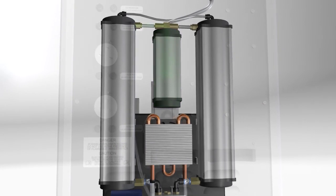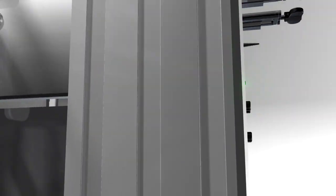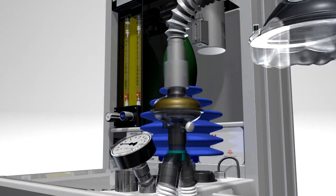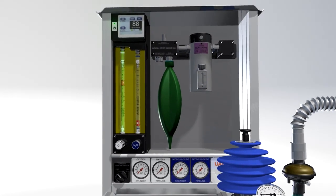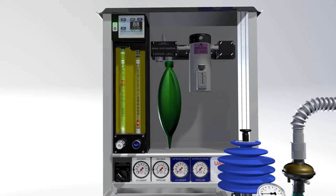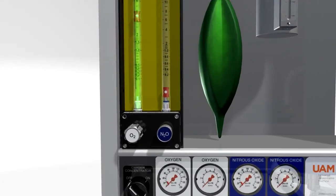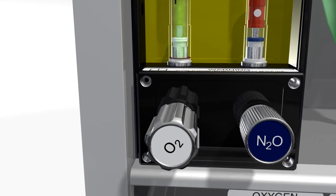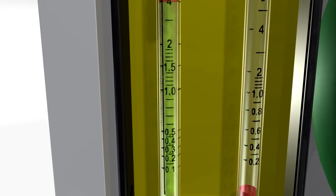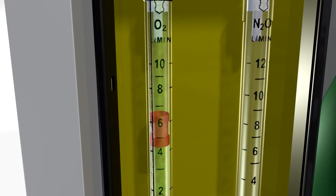The UAM produces up to 10 liters per minute of oxygen. The oxygen then travels through the flow meter into the back bar and reservoir bag. The flow meter controls the amount of oxygen entering the back bar and available for the patient. The spinning bobbin shows the flow rate in liters per minute.